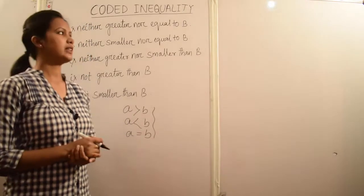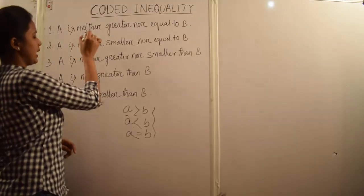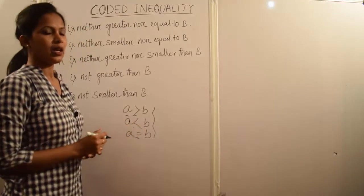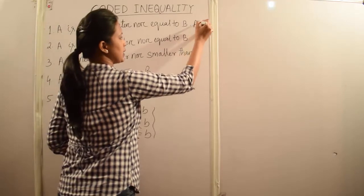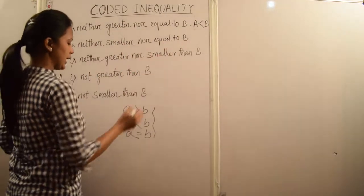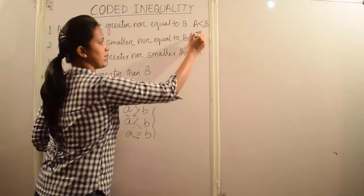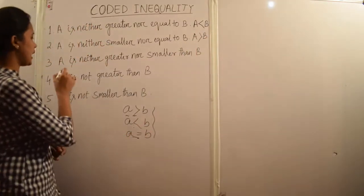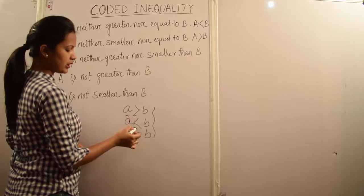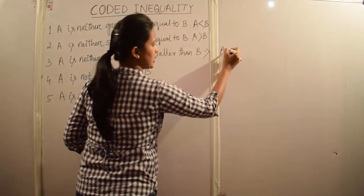These are the simple comparisons that can be derived. Beyond these, some more conclusions can be made. If we say A is neither greater nor equal to B, then the only possibility left is A is less than B. Similarly, if A is neither smaller nor equal to B, then the only possibility is A is greater than B. And if A is neither greater nor smaller than B, it is obvious that A is equal to B.